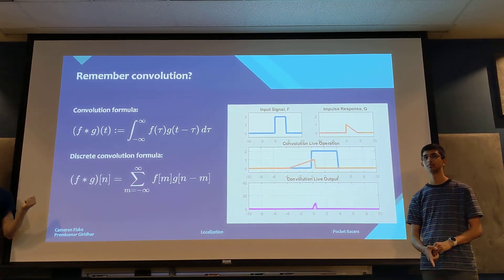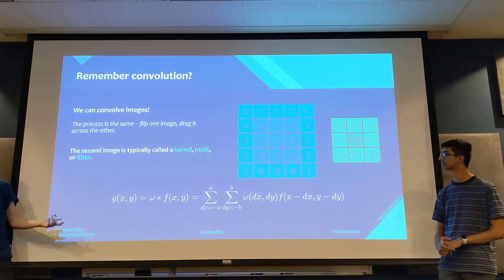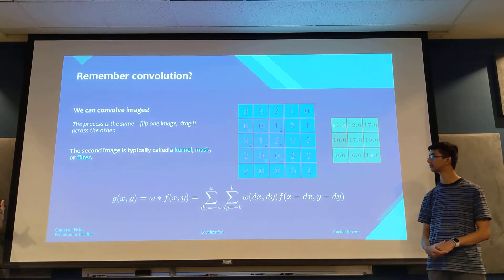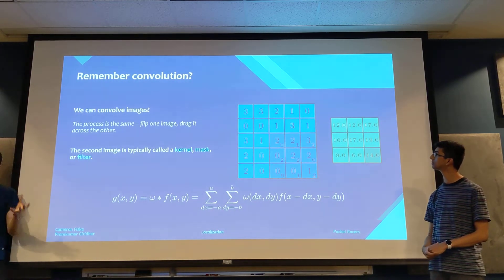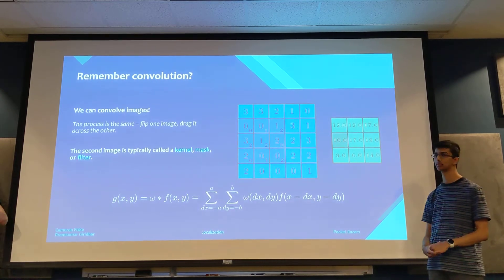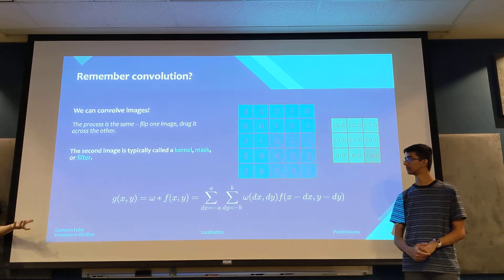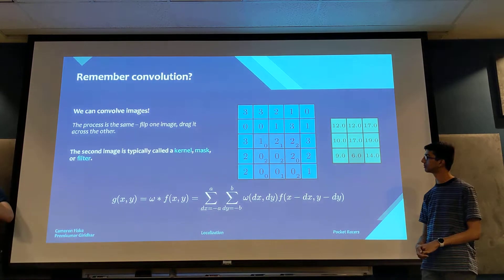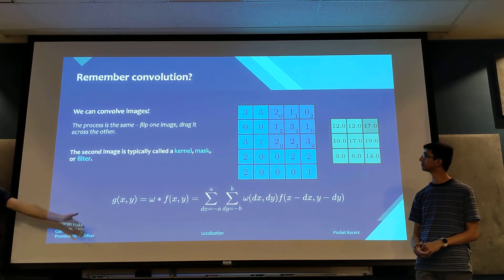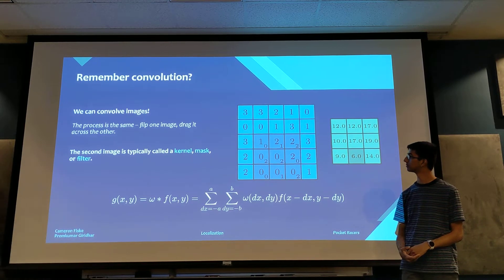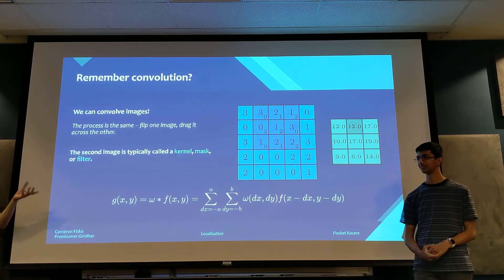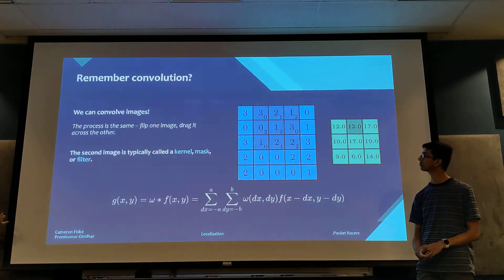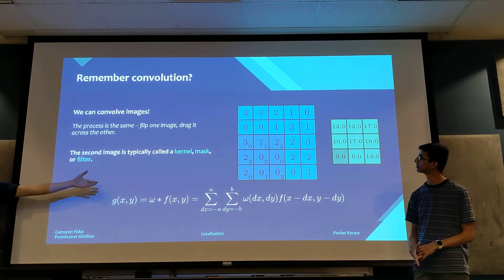So how does convolution work with images? Instead of convolving an image with an image, we're really just convolving an image with a smaller image. The smaller image is usually called a kernel, a mask, or a filter — these terms are used interchangeably. Since images are two-dimensional, we have to update our convolution equation to include that extra dimension.